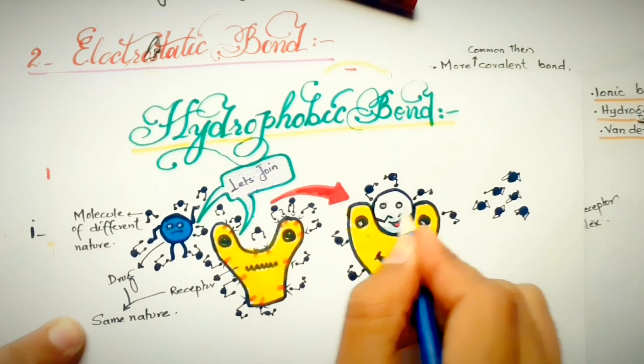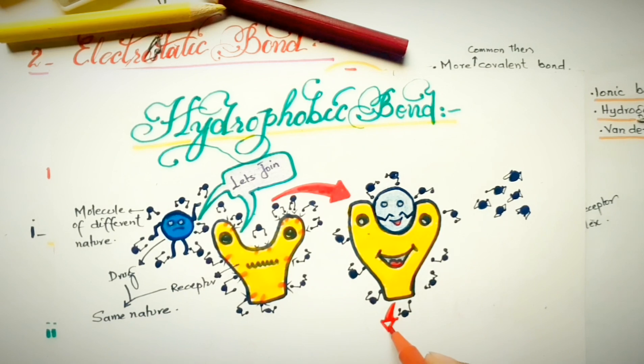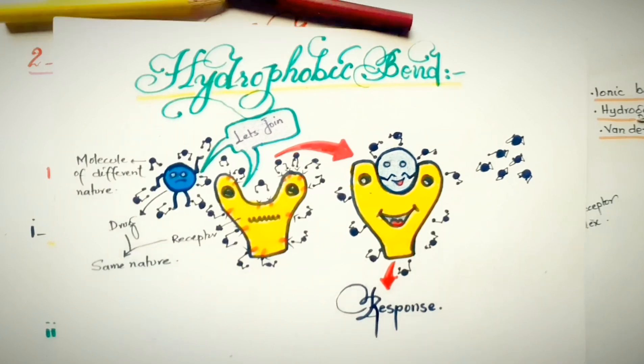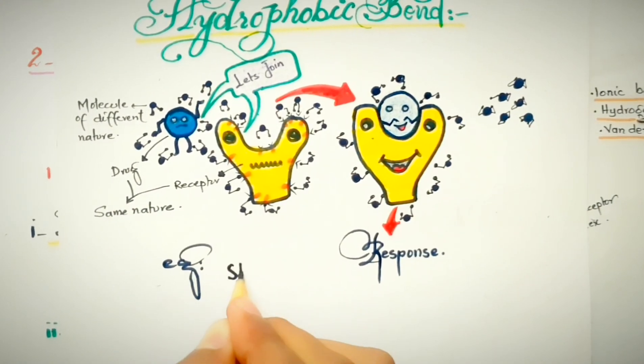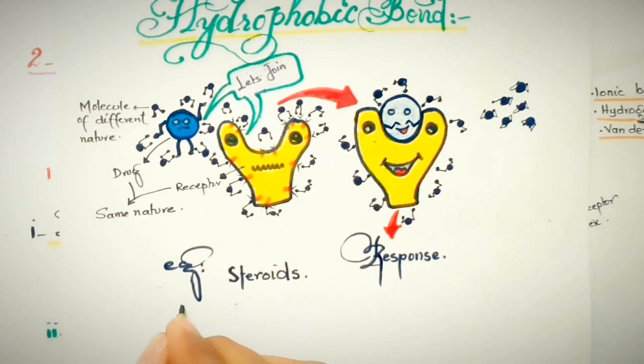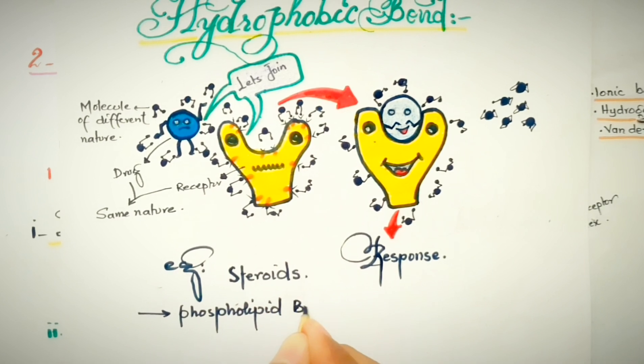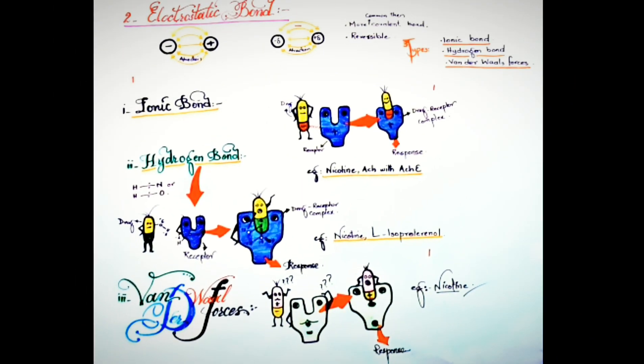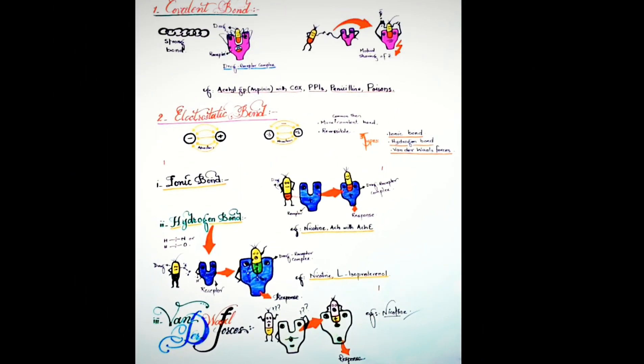The drugs which form a hydrophobic bond with its receptors and show response include all steroids, which is corticosteroids, dexamethasone, prednisolone, prednisone, etc., and spironolactone which has an antagonistic activity. Moreover, phospholipid bilayer also maintains its shape and rigidity due to these types of bonds between the macromolecules of the cell membrane. And with this, thanks for watching our video and support us by subscribing our channel.